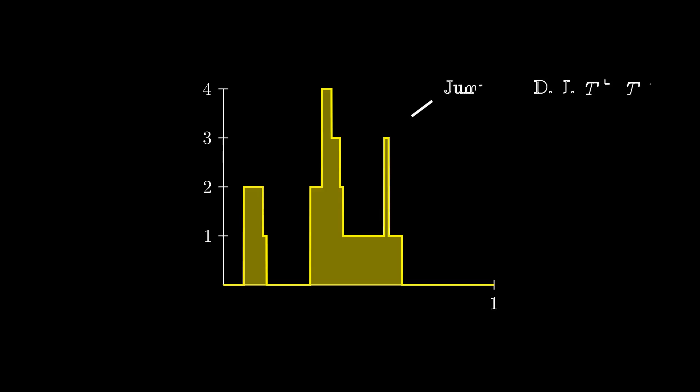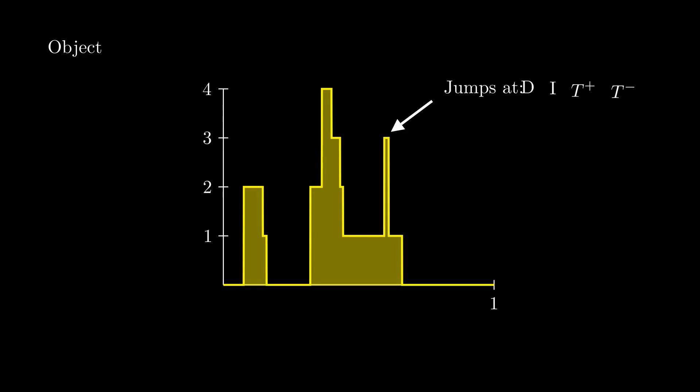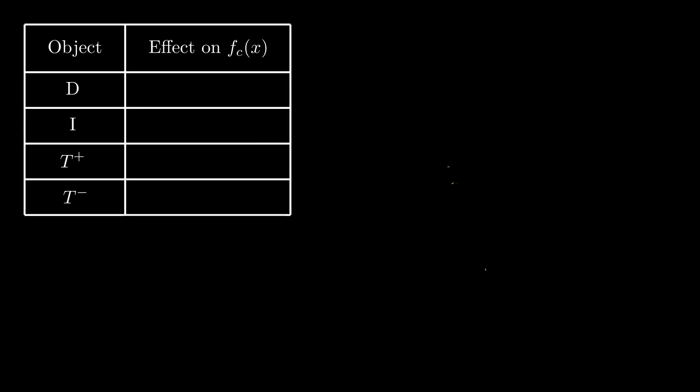Now we know the only times fc changes value is when we pass a bitangent, a double point, or an inflection point. It's worth convincing yourself that this is true and reasoning through it on your own, since we haven't actually proved this fact. We're more relying on intuition and spatial reasoning here. This conclusion seems promising though, because these are exactly the points of interest that we're after in the Fabricius-Bjerre theorem.